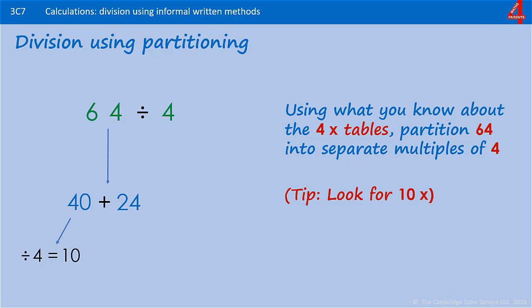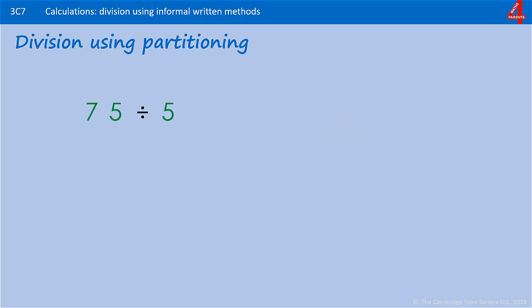And 24 divided by 4 is 6. If we add the 10 and the 6 together, that tells us how many fours there are in 64. Here's another one. If you're feeling confident, have a go at this, but we'll work through this one together for anyone who's not sure.